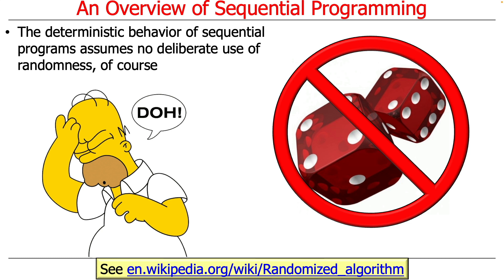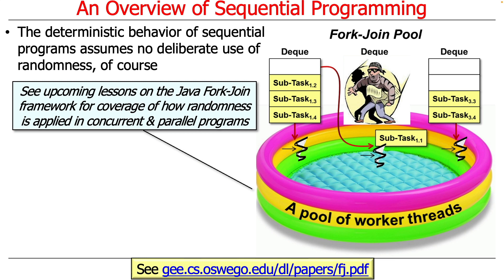We'll talk about why concurrency gives you a win because you can run things in different orders than they were initially submitted, and things that take less time get done faster. Of course, deterministic behavior in sequential programs assumes there is no deliberate use of randomness. Some programs use randomness for various reasons — you can have a sequential program that uses randomness and it will not be deterministic, but that's not what we're talking about here. We will also talk later about how Java and its fork-join framework uses randomness intentionally to make programs work more optimally. It's all about maximizing utilization and making sure that threads that don't have much to work on can grab work from threads that have too much — something called work stealing.